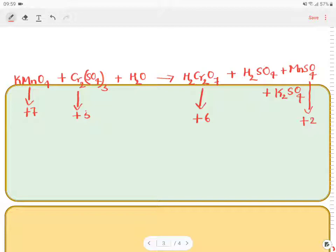Now just find out how many electrons are changing during oxidation and reduction. From Mn plus 7 to Mn plus 2, there is a decrease in oxidation number. Decrease in oxidation number, we call it as reduction. Reduction.